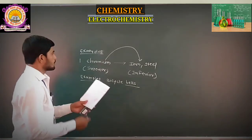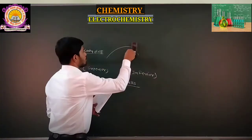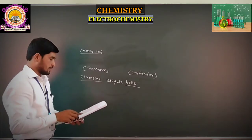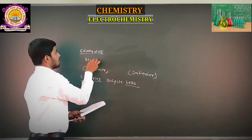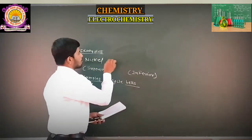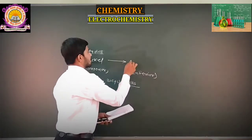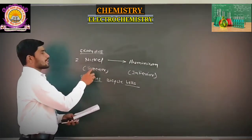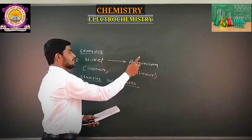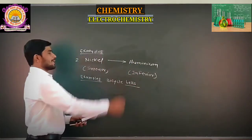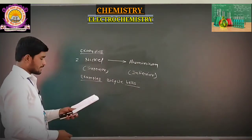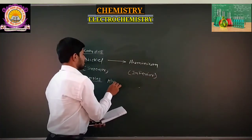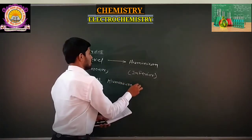Another famous example in electroplating: most of the time, nickel metal is plated on aluminium metal. The same concept applies here — nickel metal is superior compared to aluminium, and aluminium metal is inferior compared to nickel metal.